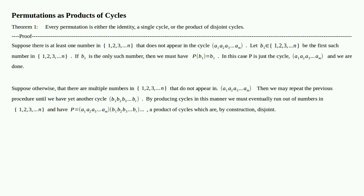By producing cycles in this manner we must eventually run out of numbers in {1, ..., n}, and we have P equal to the cycle (a₁, ..., aₘ) times the cycle (b₁, ..., bᵣ), and so forth. This is a product of cycles which are by construction disjoint — none of the b's equal any of the a's. We started with the identity case, then a single cycle, then a product of disjoint cycles. We've proved the theorem. QED.